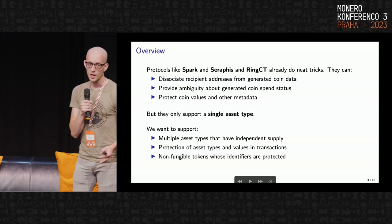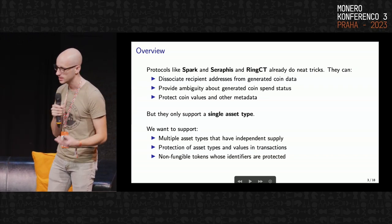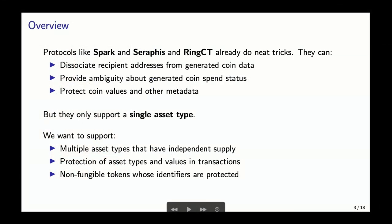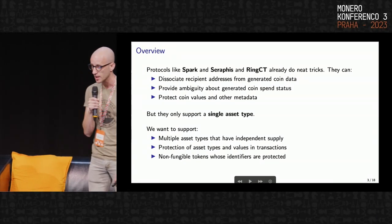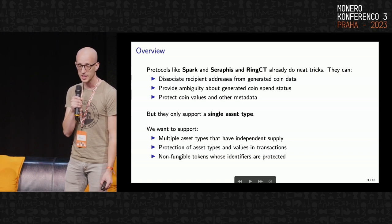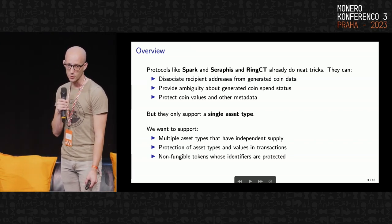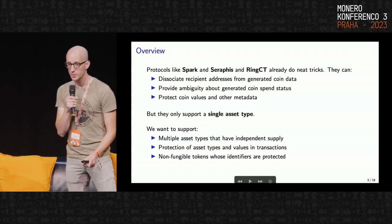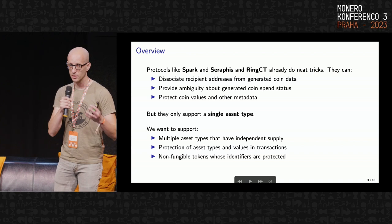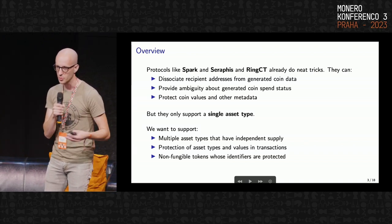Let's do a brief overview about why we might want to talk about confidential assets and tokens and how that fits into existing protocols. We have some confidential protocols like RingCT, Seraphis, and Spark, which shares some of the same underlying framework ideas as Seraphis. They can already do some really interesting things: using stealth addressing techniques to dissociate recipient addresses from the coin data that goes on-chain, providing ambiguity about the spend status of coins, and protecting coin values and metadata using encryption, commitments, and other cryptographic techniques. But importantly, they only support a single asset type — a single defined supply that can be transferred between users.